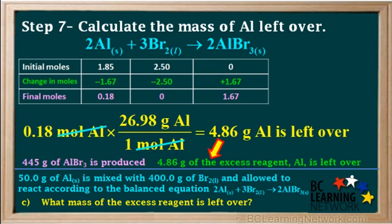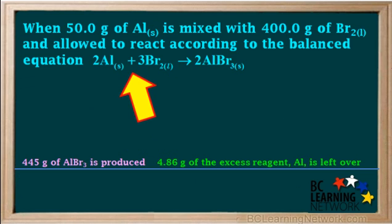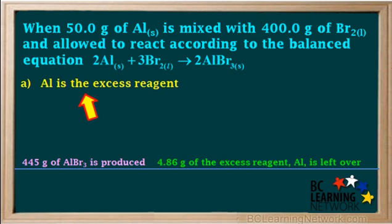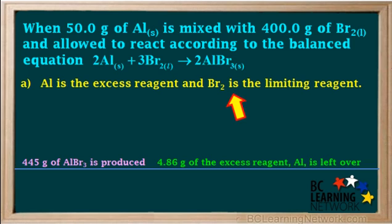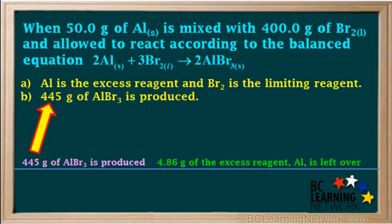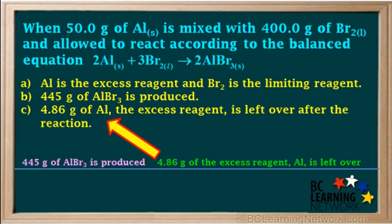To summarize: when 50 grams of aluminum is mixed with 400 grams of bromine and allowed to react, aluminum is the excess reagent and bromine is the limiting reagent. The reaction produces 445 grams of aluminum bromide, and 4.86 grams of the excess reagent, aluminum, are left over after the reaction.